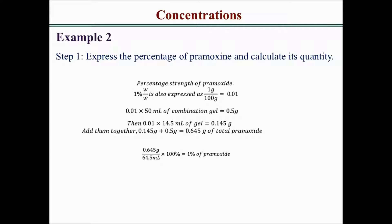Take the total pramoxine of 0.645 g divided by 64.5 mL (the total volume of the two gels), times 100%, and you get 1% pramoxine. This makes sense — when you add 1% to another 1%, the concentration doesn't change; it stays at 1%.